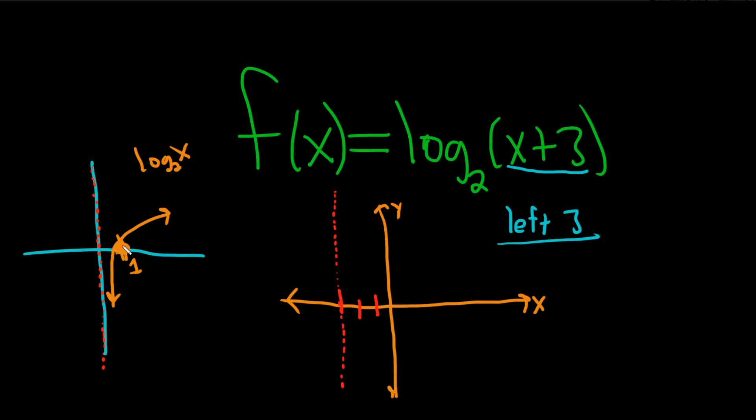And the graph is always 1 over. You see here how it's just a distance of 1 from the asymptote? Same thing here. So it'll cross right here. And it'll look something like that. And that would be the graph of our function log base 2 of x plus 3. I hope this video has been helpful.